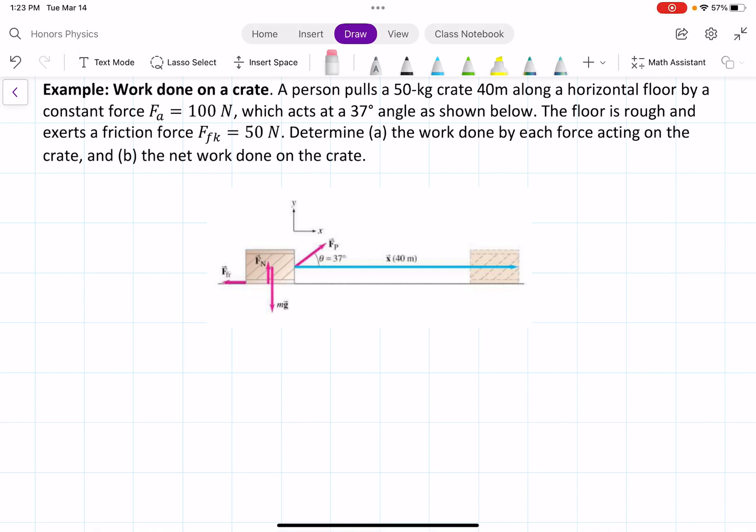Let's look at this following example. A person pulls a 50-kilogram crate 40 meters along a horizontal floor by a constant force, F_A equals 100 newtons, which acts at a 37-degree angle, as shown below. The floor is rough and exerts a friction force of 50 newtons.